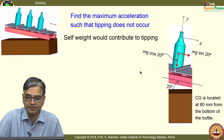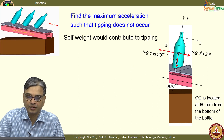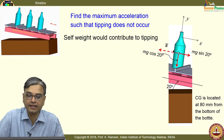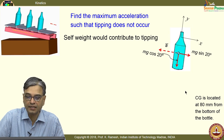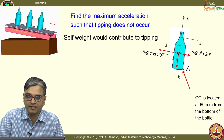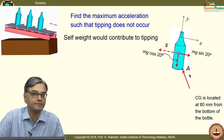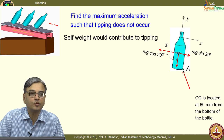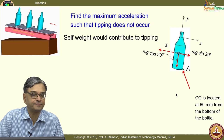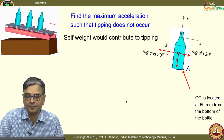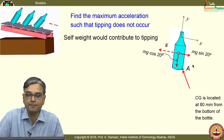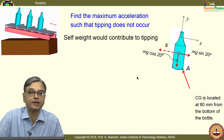We can put the weight components like this, and we also have the acceleration of the mass point. To prevent tipping, the resultant force should be within the bottle, so the limiting case is to put it at the edge. We have already seen that it is going to tip in that direction — that is what we are anticipating. Since the diagram is complete, we are in a position to write the appropriate equations.